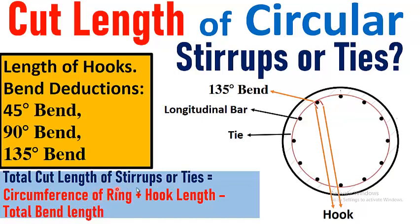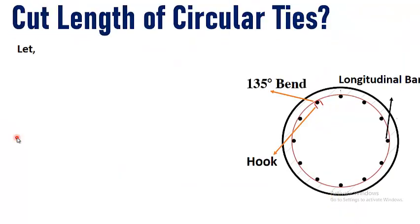The cut length of a stirrup or tie is equal to the circumference of a ring — the one you see in red color — plus hook length, minus total bend deductions. There are different types of bends that we are going to discuss in the upcoming slides, so let's get started.